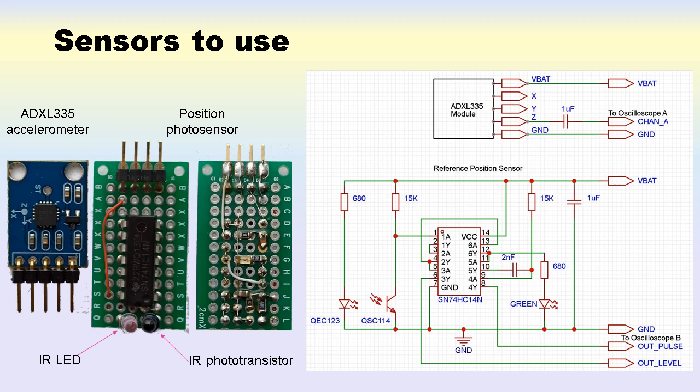In this application, we will only use z-axis signal and apply it to input A of an oscilloscope through AC coupling capacitor as shown in the schematic. It will show acceleration waveform.